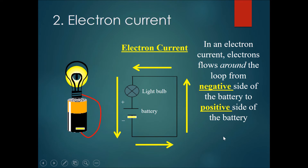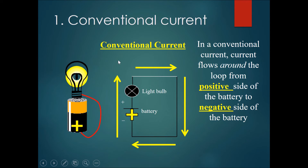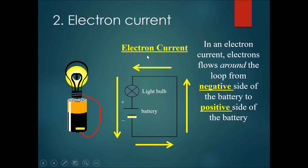Now let's compare this to electron current. For many years, it was thought that conventional current was the way current proceeded through a circuit. However, now we know that to be false. Electrons actually flow through the circuit in the opposite direction, and this is called the electron current. In an electron current, electrons flow around a loop from the negative side and go back to the positive side.